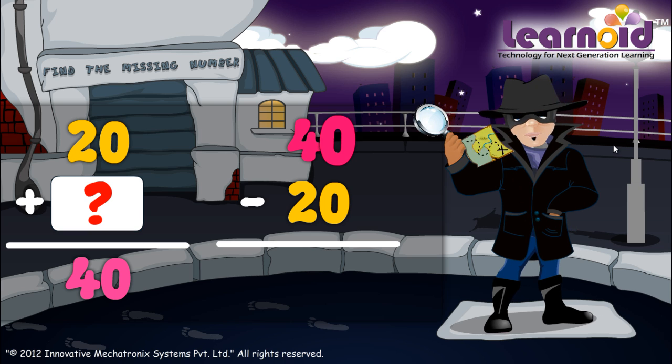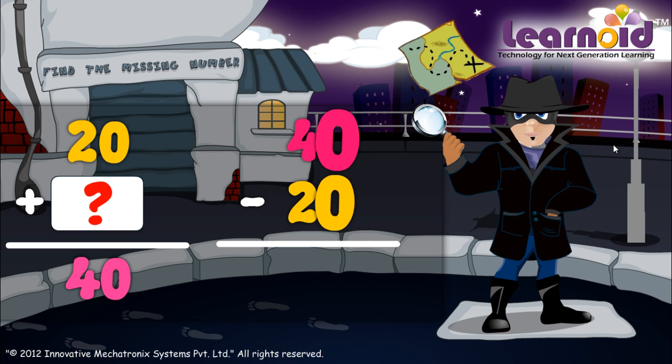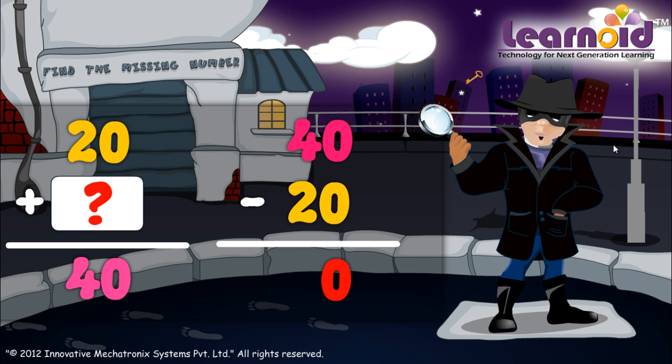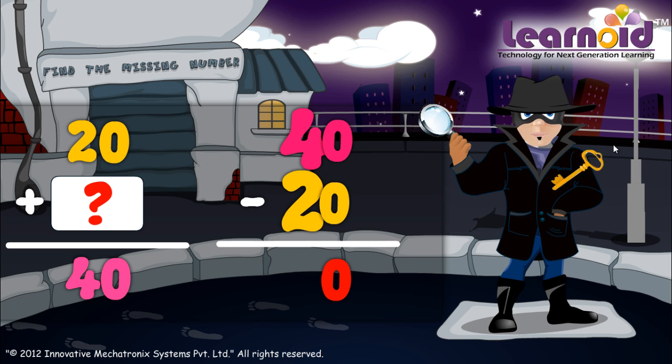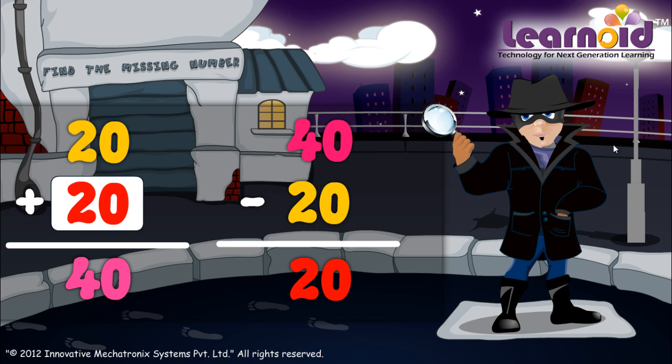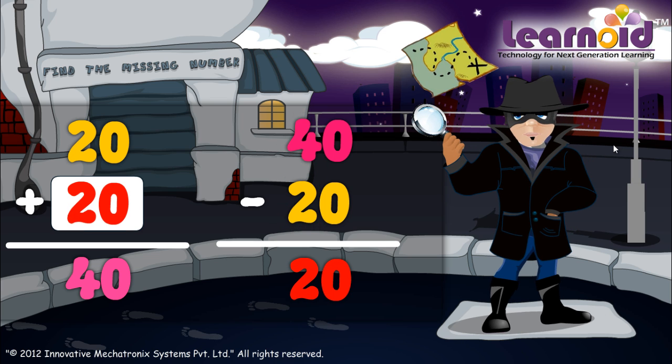0 minus 0 is 0. 4 minus 2 is 2. The missing number is 20.